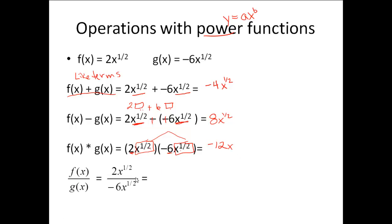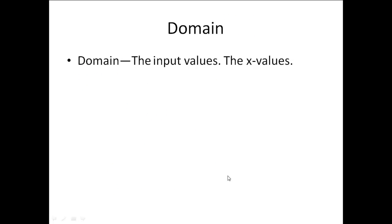For division, if I take f of x divided by g of x, I have 2x to the 1 half divided by negative 6x to the 1 half. First I focus on just my regular numbers: 2 over negative 6 reduces down to 1 over negative 3. Now I work on my x's. If I have x to the 1 half divided by x to the 1 half, I have the same bases, so my exponent rules say I need to subtract. One half minus 1 half is 0, so I have x to the 0. That equals 1, so on top I just have a 1 and on the bottom I have a negative 3.